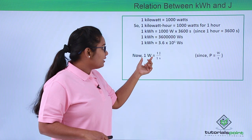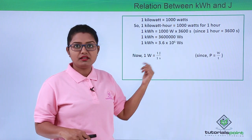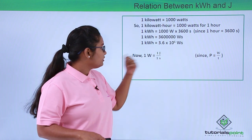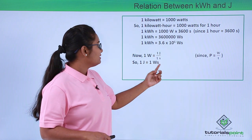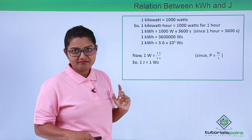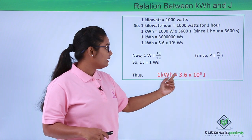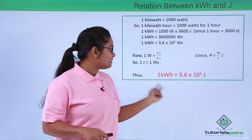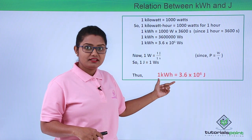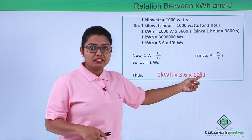Now, 1 watt equals 1 joule per second, since power equals work done divided by time taken. Therefore, 1 joule equals 1 watt-second, which means joule can replace watt-second in our expression. So, 1 kilowatt hour equals 3.6 × 10⁶ joules. This shows how large the kilowatt hour unit is — one unit corresponds to this enormous quantity of energy in joules, making it far more feasible for commercial use.